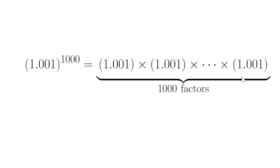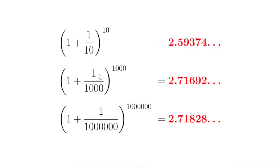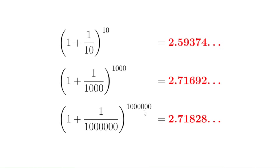It turns out that neither of those really ends up happening. Here's the expression for various values of n. For n equals a thousand, we have 2.71692. As n gets larger and larger, these numbers get closer and closer to some particular number that's about 2.718. And that's how we define e — it's the limit as n goes to infinity of 1 plus 1 over n to the n.